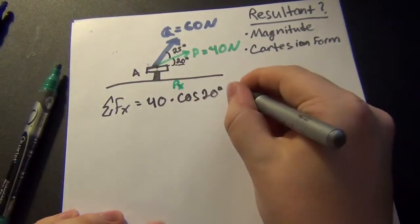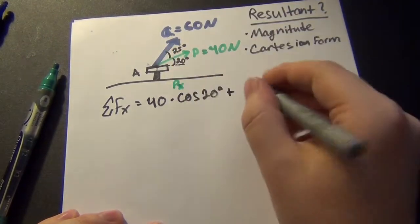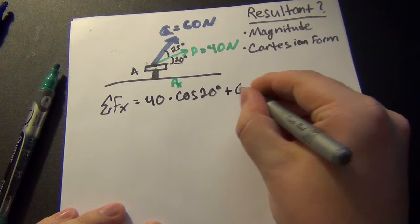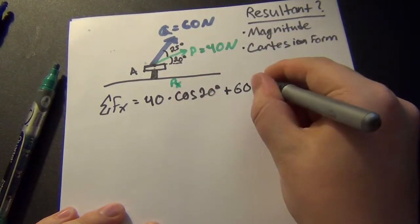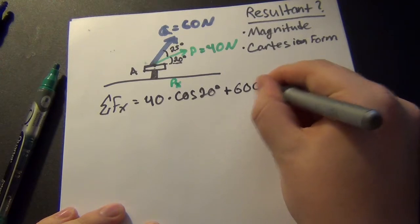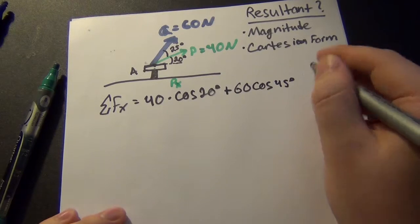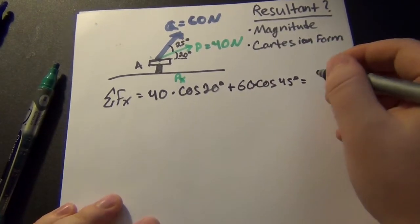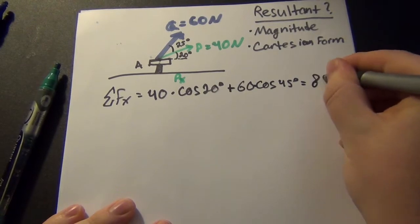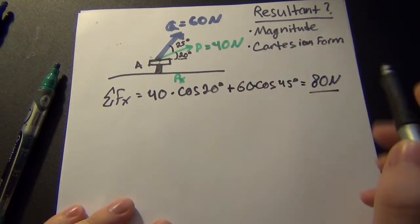So I'll make this a little labeled. P of X is this thing right here, and then we're also going to add the Q component, or the X component of Q. So that's 60 times, now this is 25 plus 20, so that just comes to 45. So we're taking the cosine because we want this direction. So that's the cosine of 45 degrees. And when you do the math in the calculator, you'll end up getting that the sum of the force in the X direction comes to 80 Newtons.